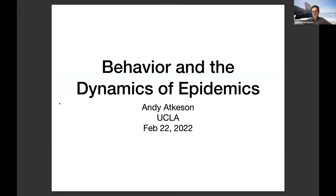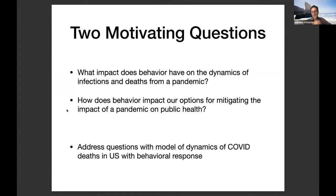This has been very interesting to be at this conference. What I'm presenting is an update of a paper I presented at Brookings in the spring of 2021. That paper was a high-level analysis of two questions: how does behavior impact the dynamics of a pandemic, and how does it impact our options for mitigating the impact of a pandemic on public health? I did that a year ago with a quantitative model of COVID dynamics in the U.S. at a very aggregate level, and I've updated it now for developments in 2022, which has changed a bunch of the answers.